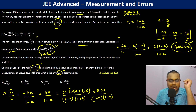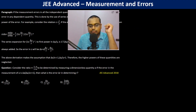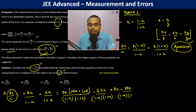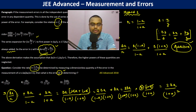So delta R by R equals 2 delta A divided by (1 minus A)(1 plus A). Therefore delta R equals 2 delta A divided by (1 minus A)(1 plus A), multiplied by R. Since R equals (1 minus A) by (1 plus A), the (1 minus A) terms cancel, giving delta R equals 2 delta A divided by (1 plus A) whole squared. So option B is the answer.